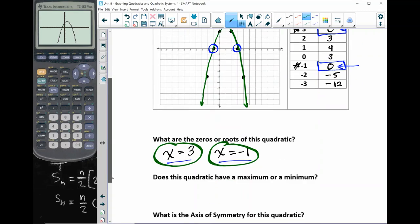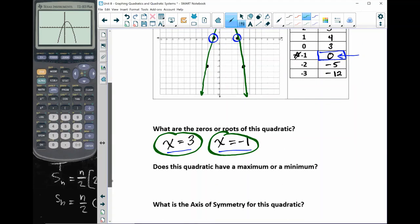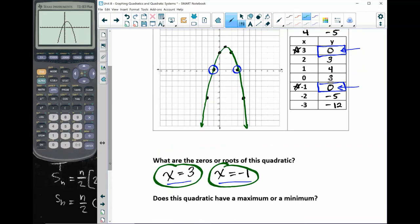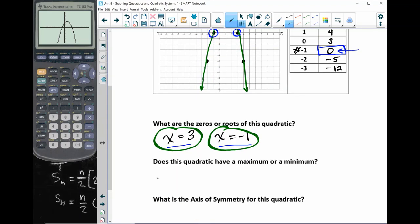The next question, does this quadratic have a maximum or a minimum? So because my parabola looks like a mountain, that means that I have a maximum. And the maximum is where y equals 4. You can see here that there is the number 4. So I have a maximum at y equals 4.